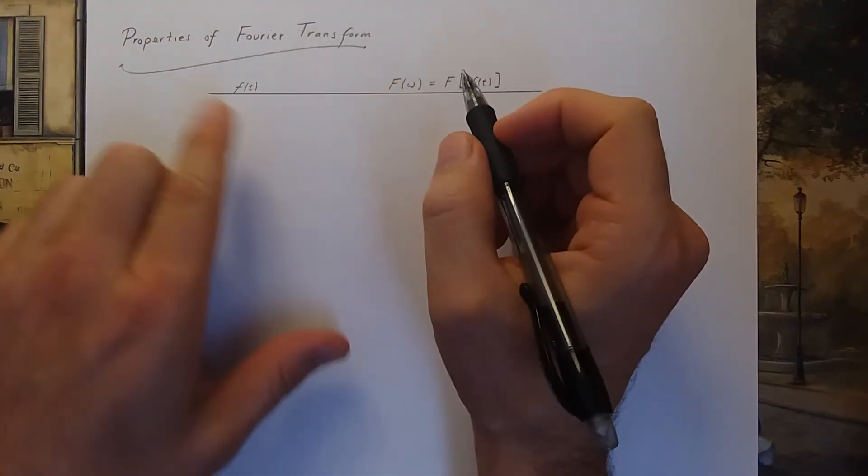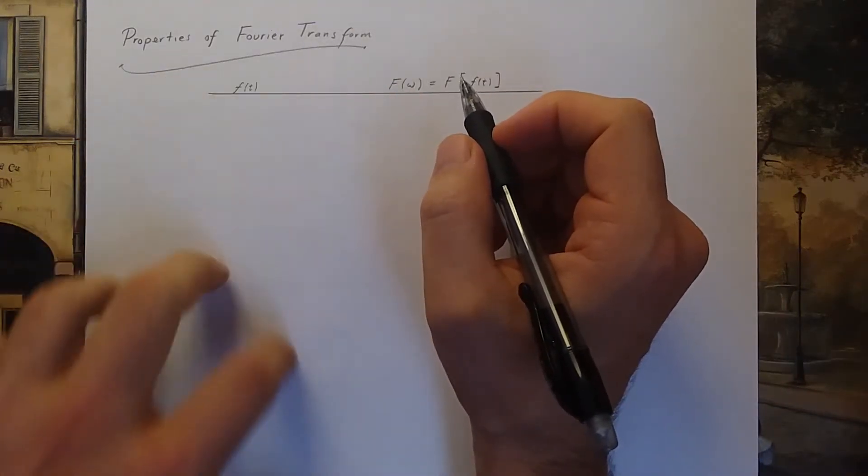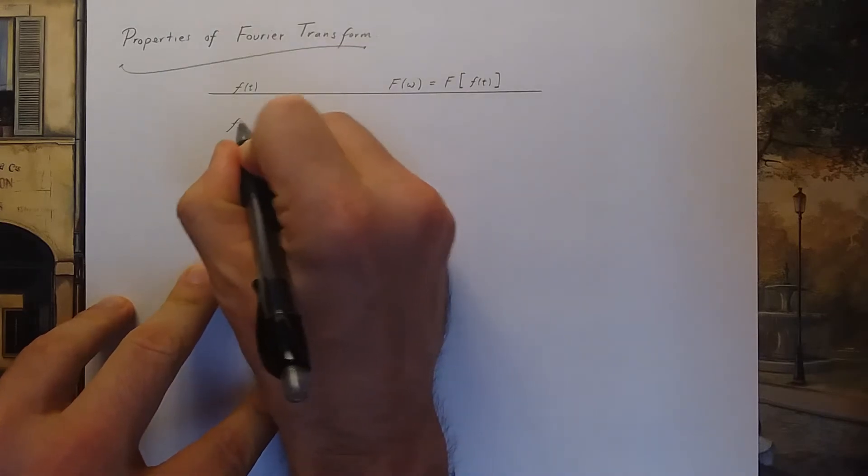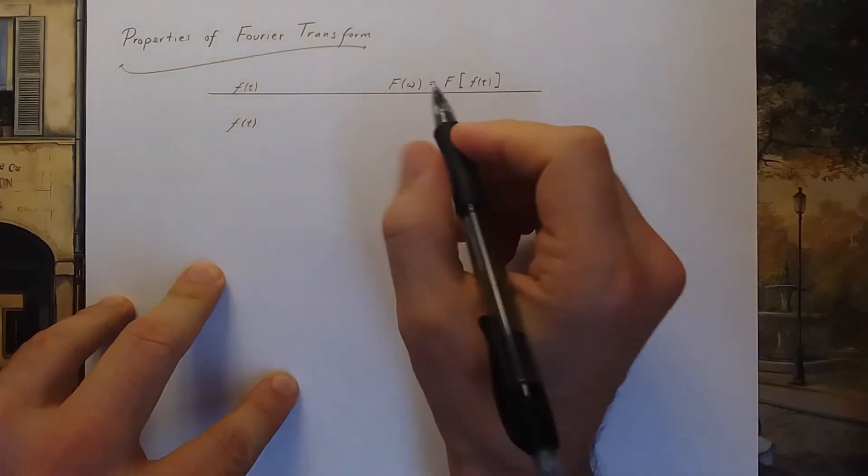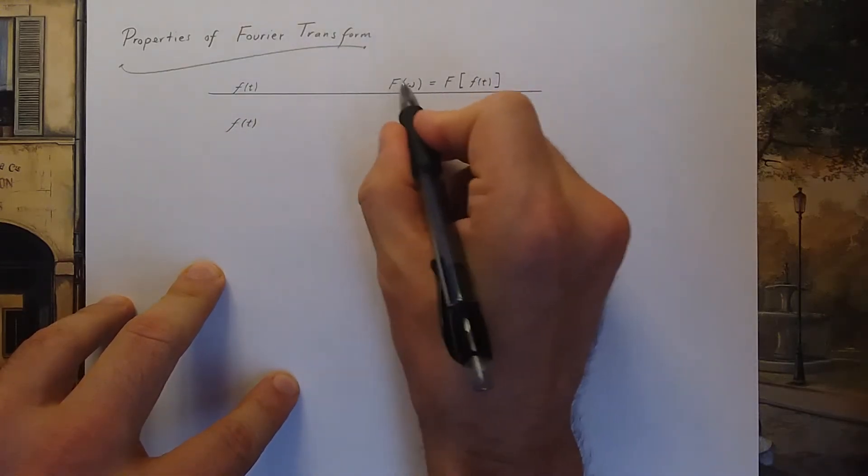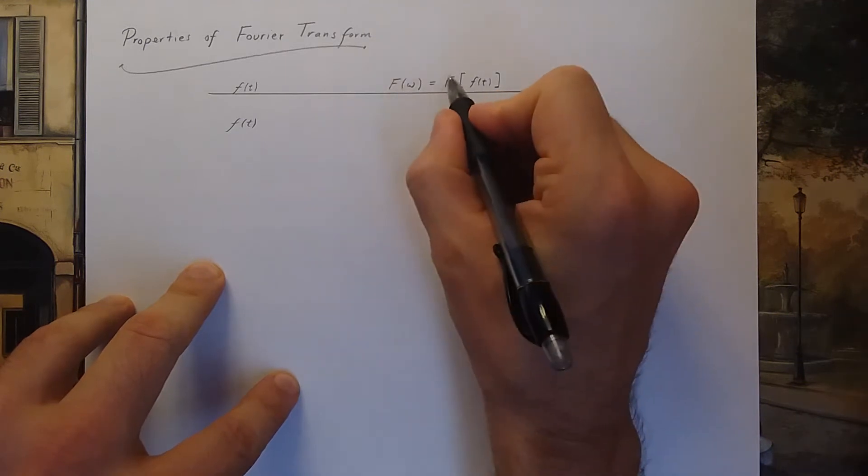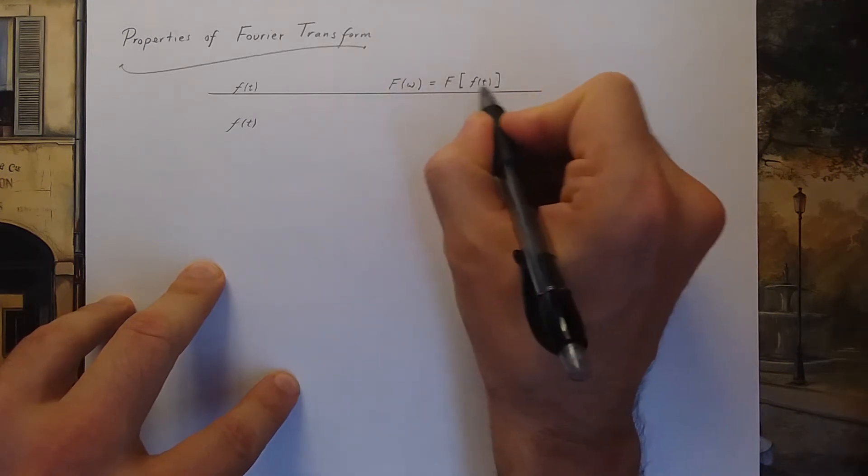So let's outline some properties of the Fourier transform. The Fourier transform takes a function of t and gives out a function of omega which we'll denote with a capital F. We'll also denote that with capital F bracket the function.